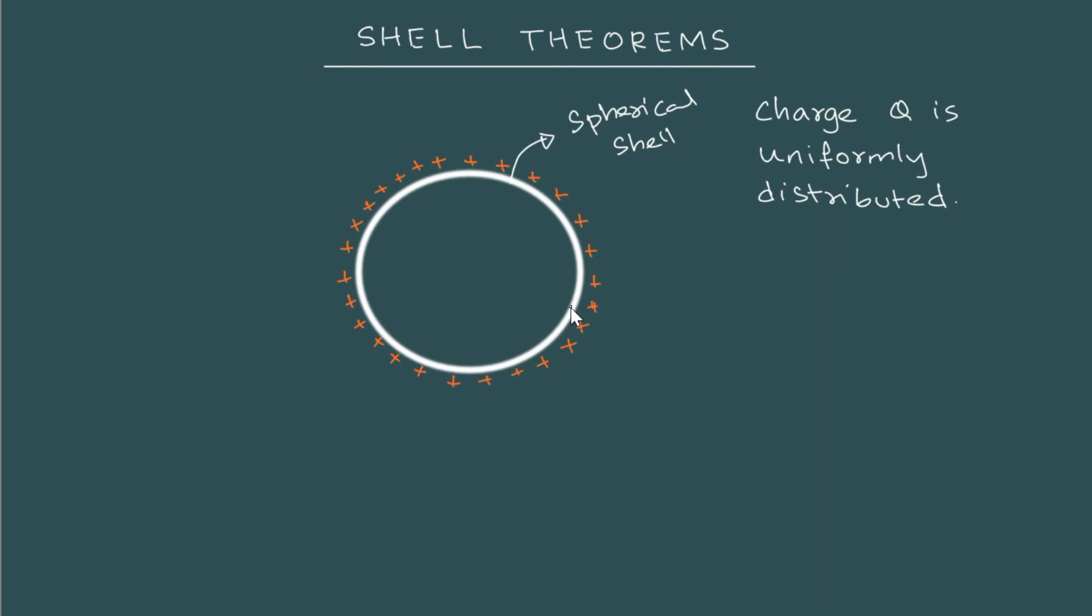If it is a conductor, you just place some charge on the sphere. You might have heard about Gauss's law and how it explains that whatever charge you place on a metallic sphere, whether it is hollow or solid, the charge ultimately gets distributed uniformly only on the outer surface. In these cases, we can use the shell theorems.